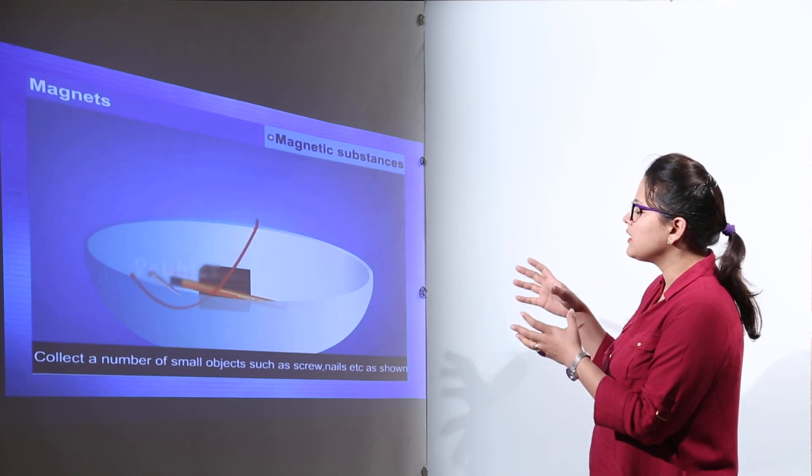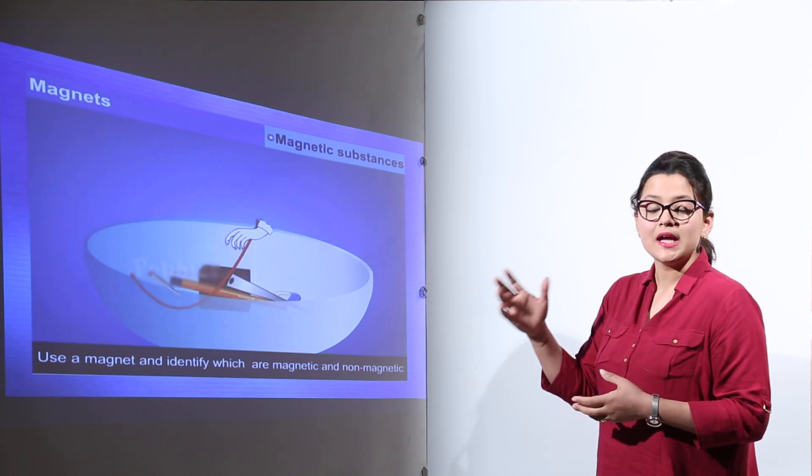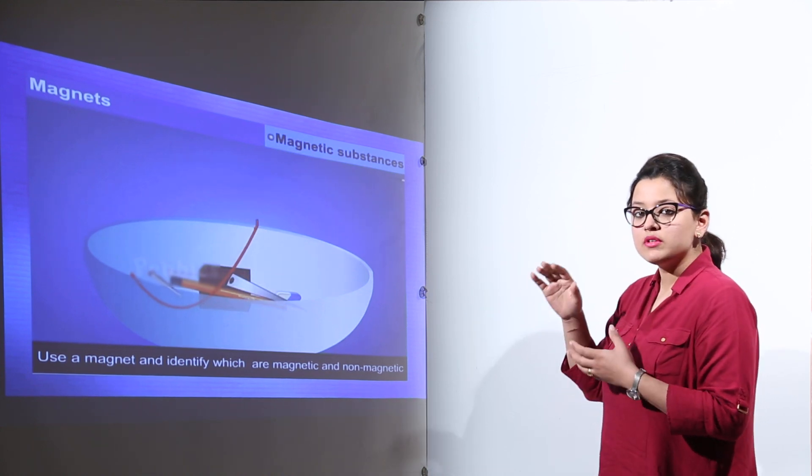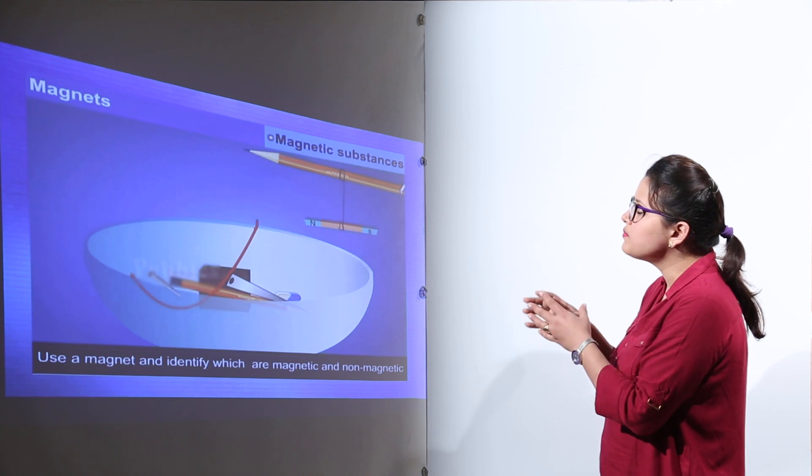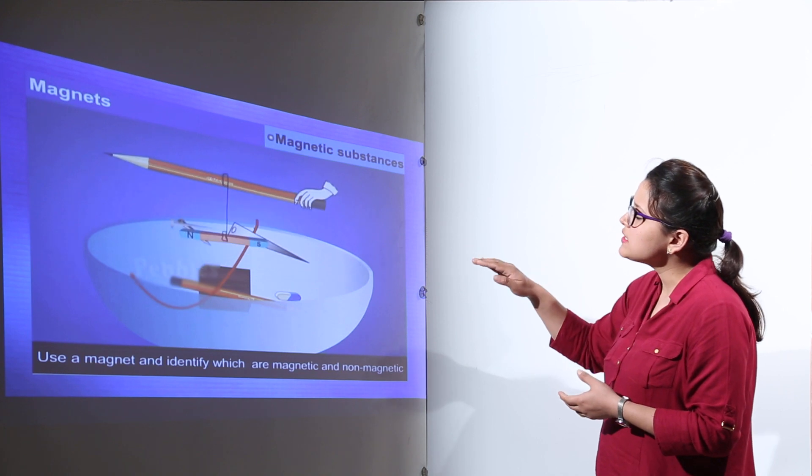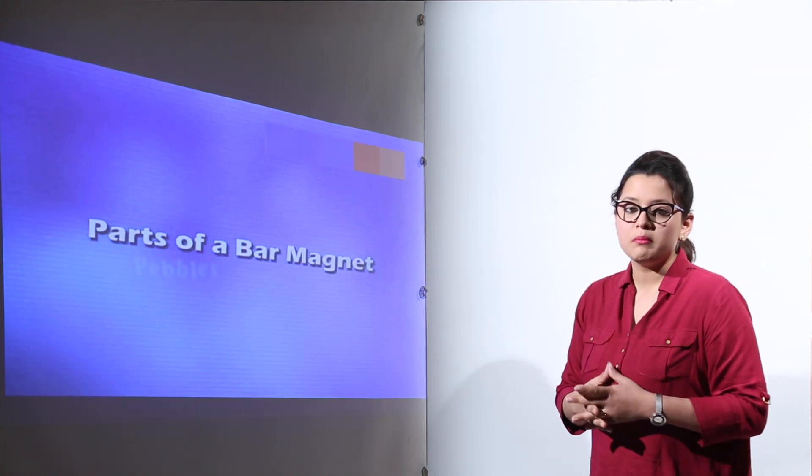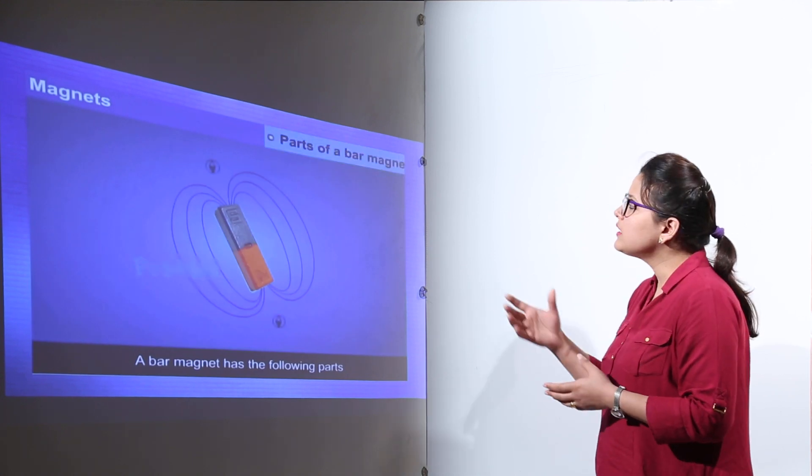So for that you can see we have just collected all the objects possible, and we will be getting a magnet over them and we will check out of all these objects how many objects are clinging to this magnet. Now here you have seen the items that have got attached were the magnetic substances.